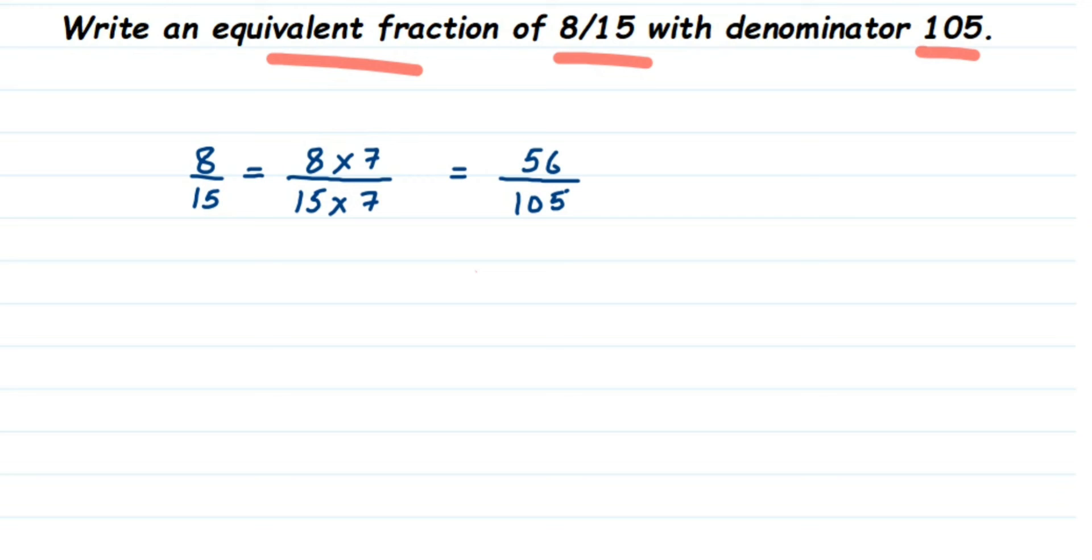It's a very simple question, I hope it's clear. In general, equivalent fractions we get by multiplying - we can multiply with any number and whatever answer you got, that becomes an equivalent fraction. But here in this question, we have specified that the denominator should be equal to 105, and that is why we're multiplying with 7. We just have to check what number you should multiply. That's it! It's very simple - you can expect this type of question for one mark or two marks.